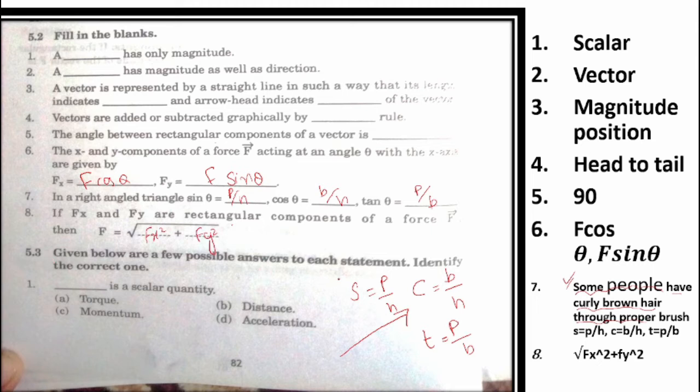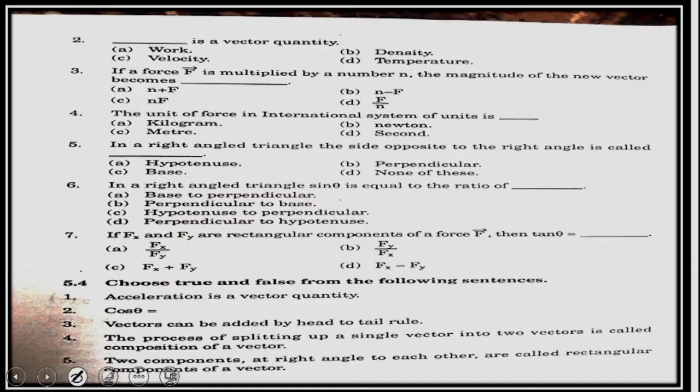Given below are few answers to each statement, which is the correct statement. A dash is scalar quantity. Work has no direction. Work is scalar. Density is scalar. Temperature is scalar. Temperature has no direction. Velocity is directed. So which quantity is vector? Velocity.